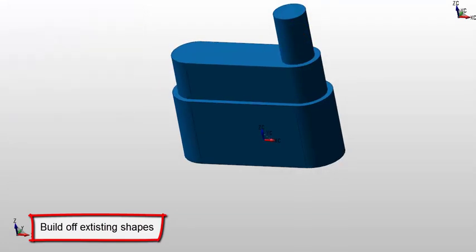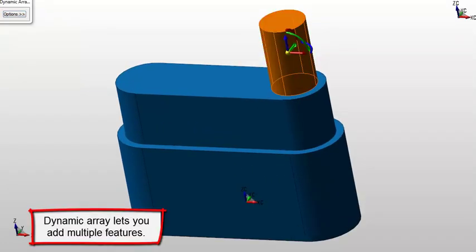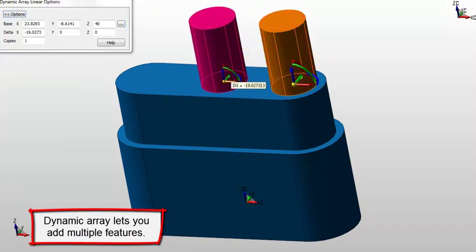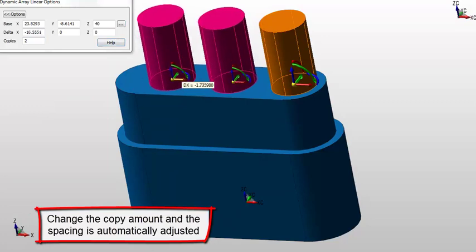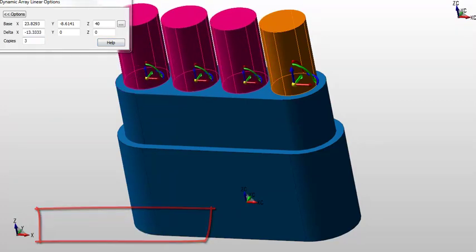You can build off existing shapes and use dynamic array to add multiple features. Change the copy amount and the spacing is automatically adjusted for you.